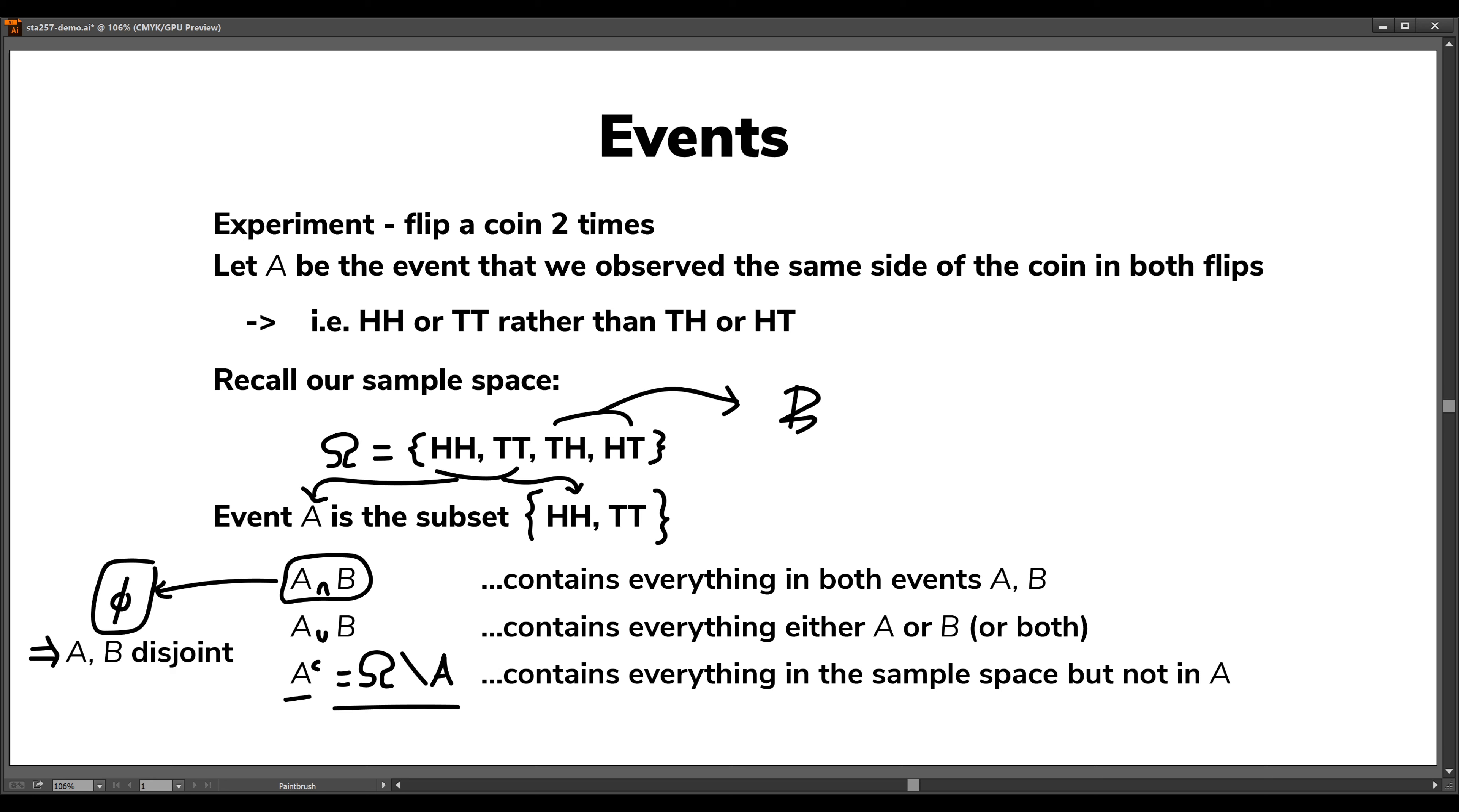And in fact, they don't share any elements in common, right? Heads heads, tails tails, and tails heads, heads tails. These are not sharing any common elements. So that's why we say A and B are disjoint, because their intersection is the empty set.